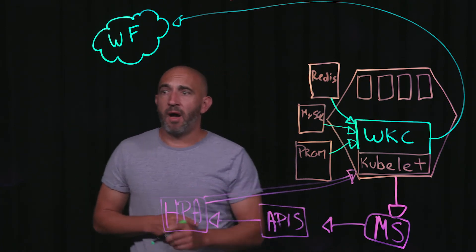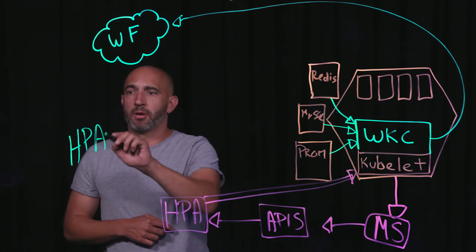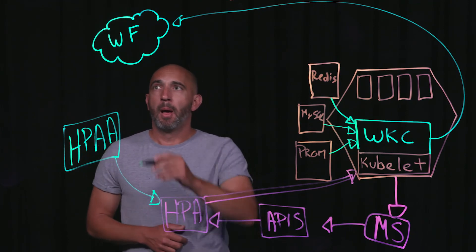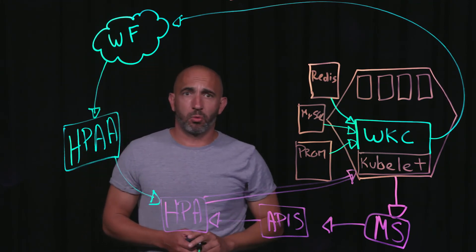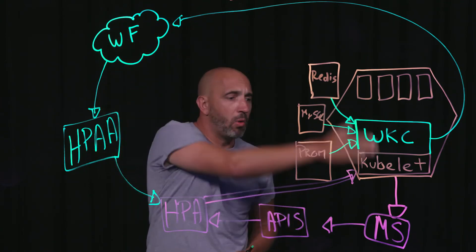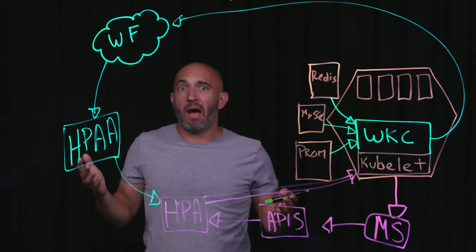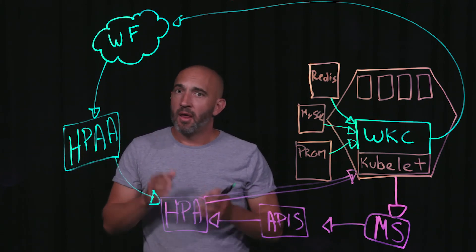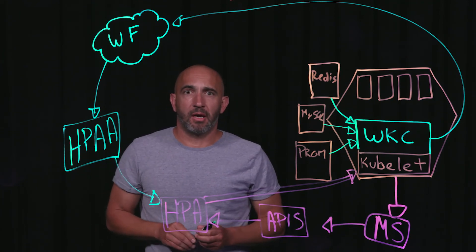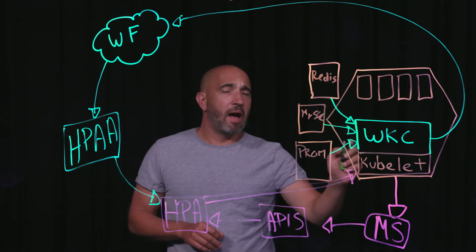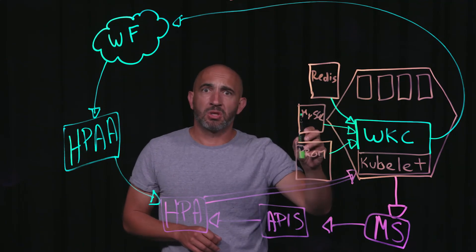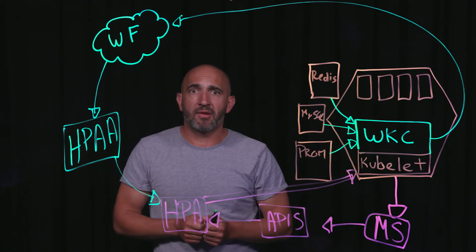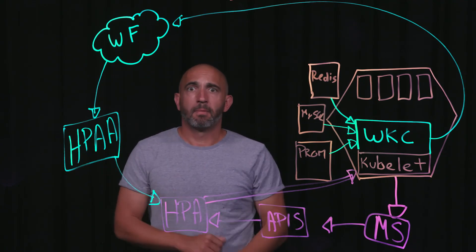Luckily, at Wavefront we also provide a Horizontal Pod Autoscaler Adapter. What it does is communicate with the Horizontal Pod Autoscaler, but uses any metrics inside of Wavefront to drive those rules — so it could be anything: metrics coming from anywhere else within your Kubernetes infrastructure or even outside of it. Maybe you've got traffic loads coming into your external load balancer and you want to scale based on that before it even hits your cluster. That's absolutely something you can do. So combined with Wavefront's automatic, out-of-the-box collection of all your infrastructure and application workloads, and the HPA Adapter, we now have everything we need to build a very robust, monitored Kubernetes environment. Thank you.